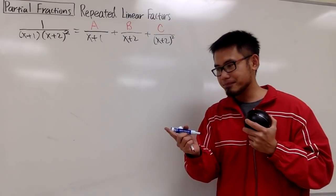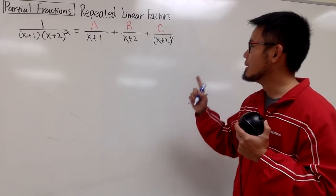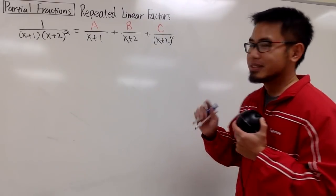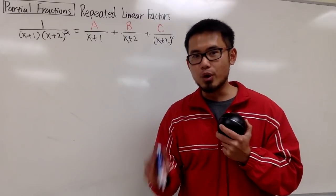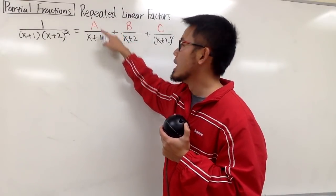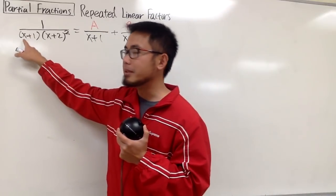But let me just impress you guys first. How we can get the a and c value. So this is how the cover-up method is going to work. I can get the a value right away because the denominator here is x plus 1, which I have the same exact one right here.